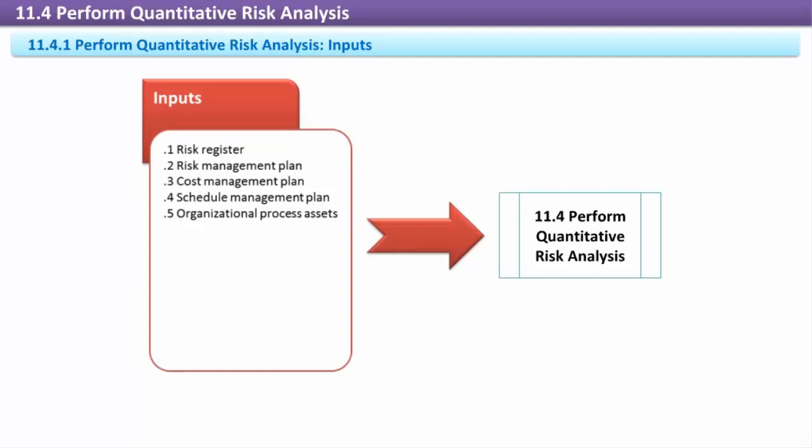Inputs: Risk Register. The risk register is a comprehensive list of all threats and opportunities the project faces. It also contains supplementary data about each risk, including its impact, probability, risk response, budget, risk owner, and contingency and fallback plans.